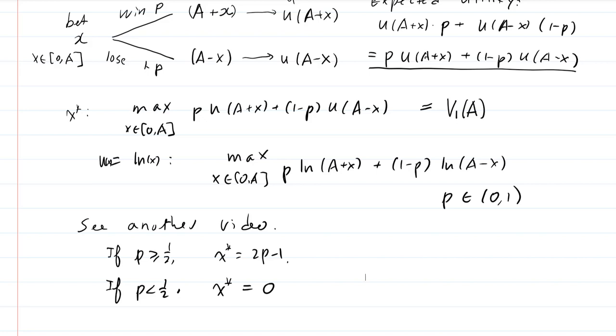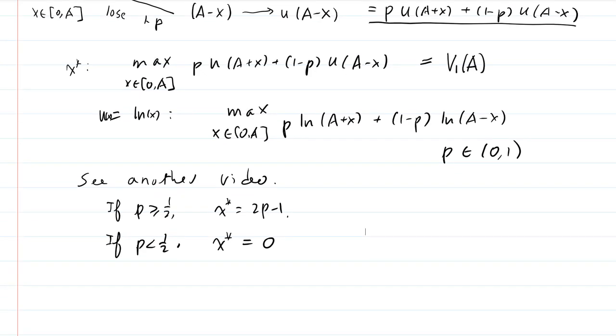If you think about this solution, it makes perfect sense. If the win probability is greater than 1 half, you're going to bet a positive amount. If the win probability is less than 1 half, you're not going to bet anything. That's to your benefit.